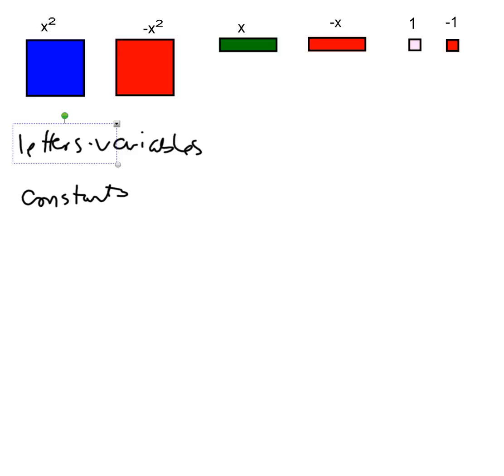If you think about it in English, the word constant means that it never changes. That's kind of the same in algebra. The number 3, if I said plus 3, that's never going to change. I'm always going to add 3.